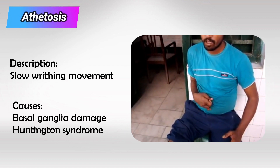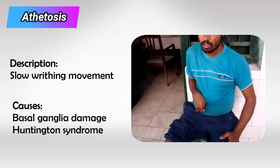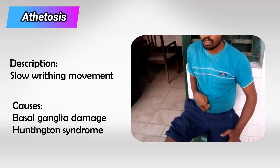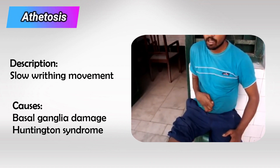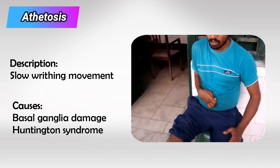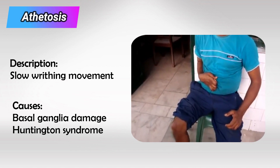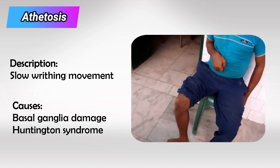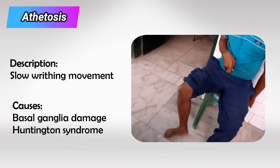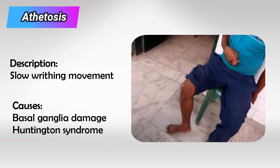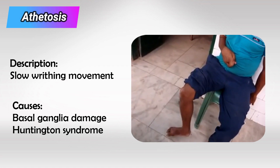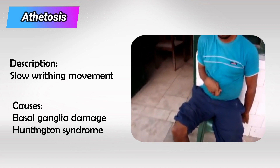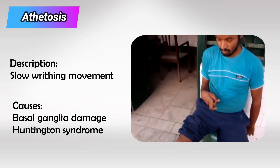Next we have athetosis, and this is a slow, writhing-like movement. It mainly affects small muscles in the hand, and we see it in basal ganglia disorders and Huntington's syndrome.